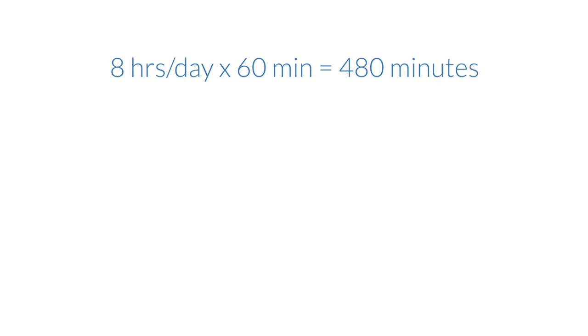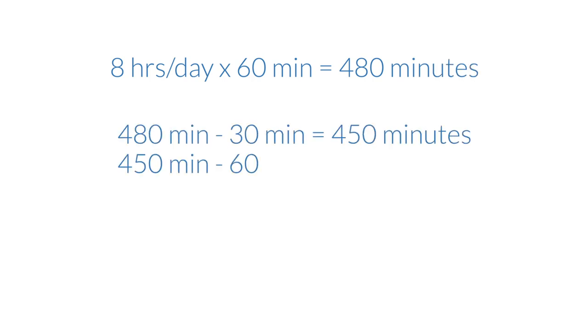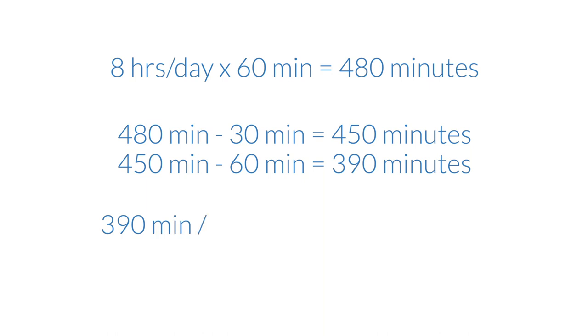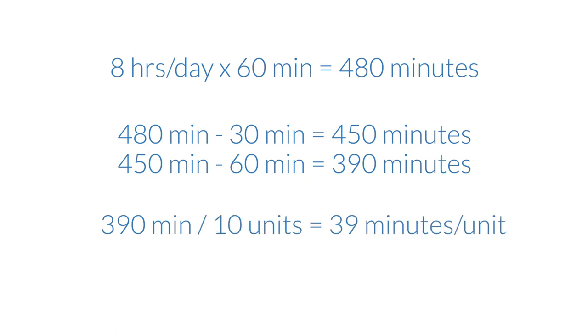Let's look at an example. We have 8 hours a day times 60, which equals 480 minutes. We'll subtract the 30-minute break and the 60 minutes of downtime. In the end, we have a total of 390 minutes of available work time. We'll divide this by the 10 units demanded and get 39, which tells us that a unit needs to be produced every 39 minutes.